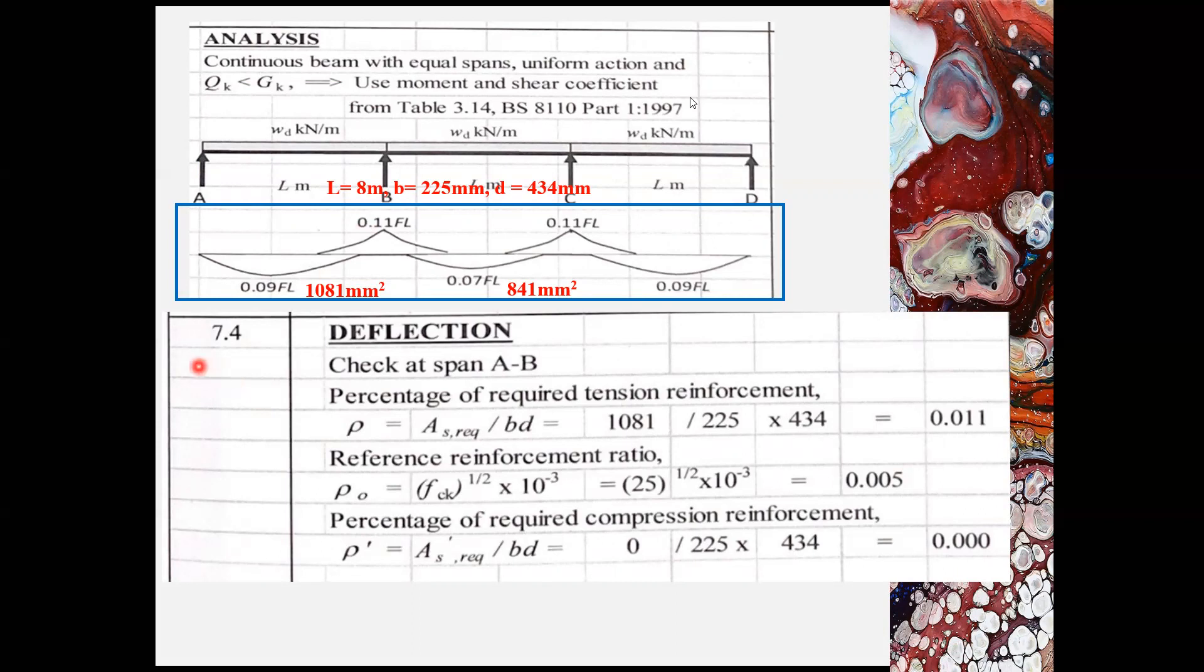There are few percentages to be determined. The first percentage of required tension reinforcement, which is rho. The reference reinforcement ratio, rho naught. And percentage of required compression reinforcement, rho prime. So these are the equations for each of these percentage of reference ratios.